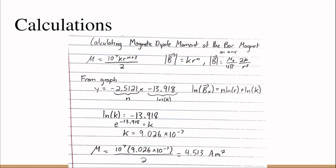These are some of my calculations. To first calculate the magnetic dipole moment, I set the formulas of the magnetic fields equal to each other, and those formulas are shown on the top right. I was able to derive a formula for the magnetic dipole moment.